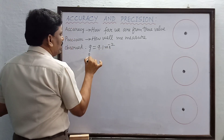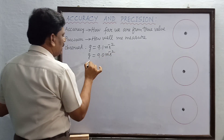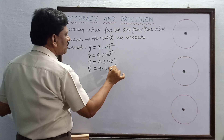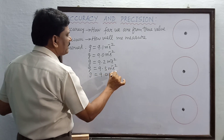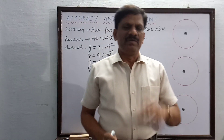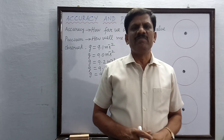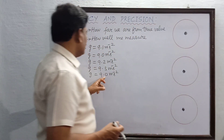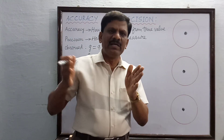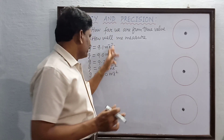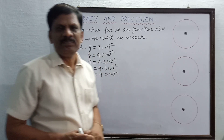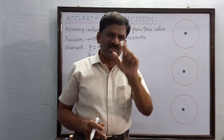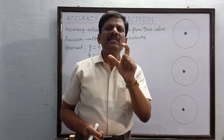The observed values of g are: 9.1, 9.0, 9.2, 9.3, and 9.0 meters per second square. For these five different lengths, every time you get values of g very close to each other — 9.0 and 9.3 are not very far apart. The average can be taken as about 9.1. Since all five observations are very close to each other, your measurement is precise.